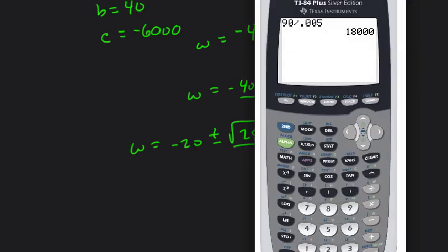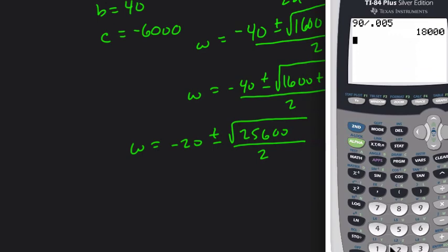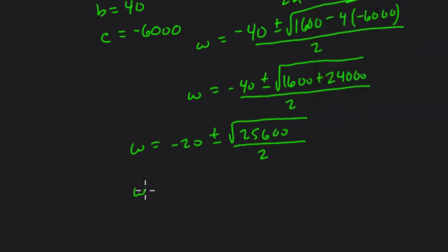Now I don't know if that's a perfect square. Let's see, what is the square root of 25,600? Oh, very nice, it is a perfect square. So we have W equals negative 20 plus or minus 160 over 2. So W equals negative 20 plus or minus 80.